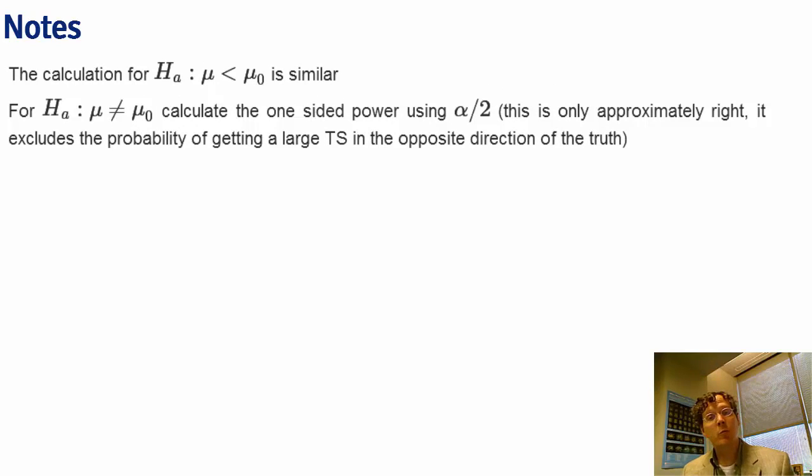When you're testing not equal to, just make sure you use the z 1 minus alpha over 2 instead of z 1 minus alpha, that critical value. So for example, for alpha equal to 0.05, you want to make sure you use 1.96 and not 1.645, and then just do the one-sided power for whatever direction mu a is, whether it's mu a greater than mu naught or mu a less than mu naught. And this is only approximately right. It omits a small component of power, but that component of power is only meaningful if mu a and mu naught are close together.